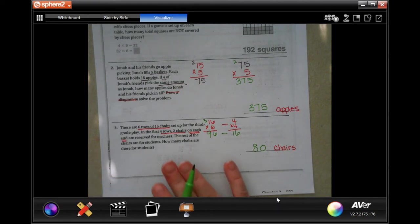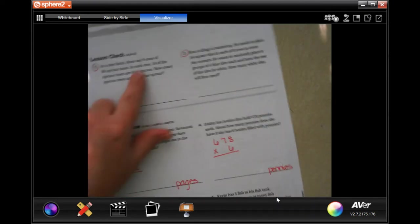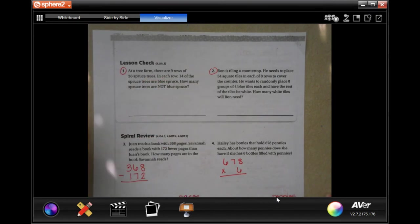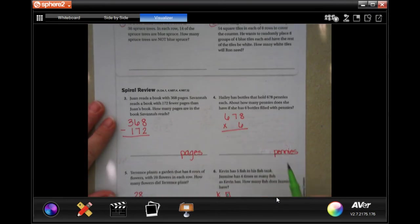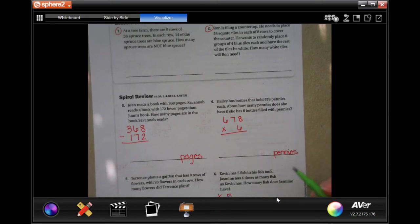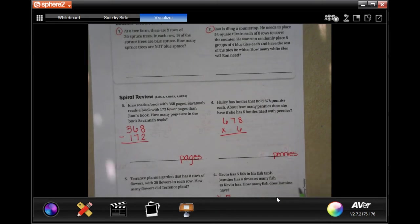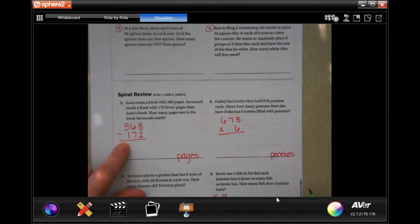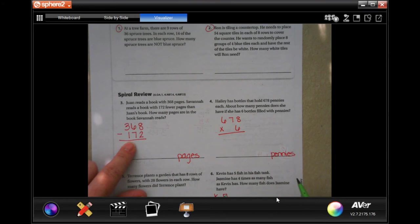All right. So now you guys are going to do the lesson check on the back. You totally can, I believe in you. We are going to go ahead and do number three on spiral overview first. And it says, one reads a book with 368 pages. Savannah reads a book with 172 fewer pages than one. So we're going to take it away. How many pages are in the book Savannah reads?